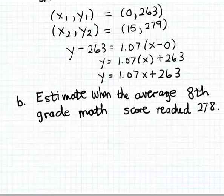Alright, so the way we're going to answer this question is by solving an equation. And we get that equation by taking this score, 278, and simply substituting it for y in our linear function formula. So when we do that, we get 278 is equal to 1.07 times x plus 263.